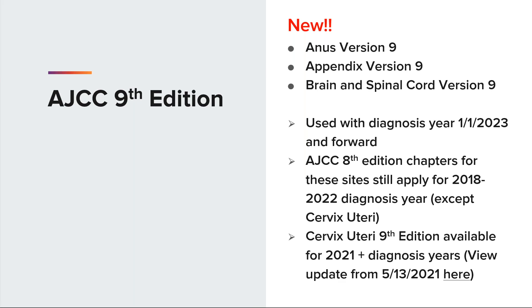New for the AJCC TNM staging, a 9th edition has been released for the following sites: the anus, appendix, and the brain and spinal cord. We will use these new manuals with cases diagnosed January 1st, 2023 and forward. The AJCC 8th edition chapters for these sites still apply for the 2018 to 2022 diagnosis years, except for the cervix uteri, which has a 9th edition available for 2021 diagnosis years.